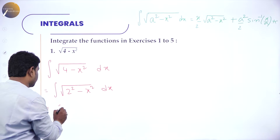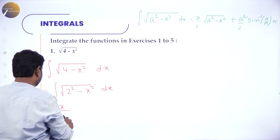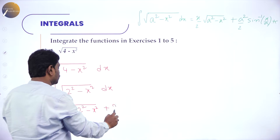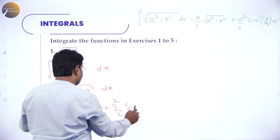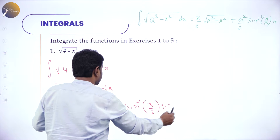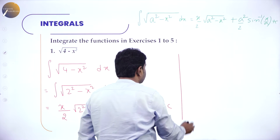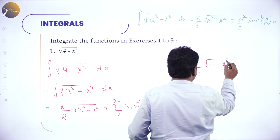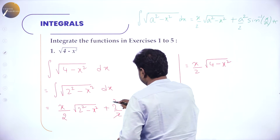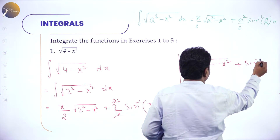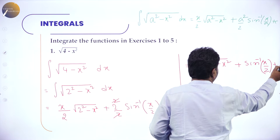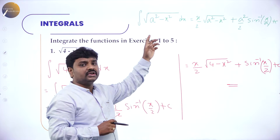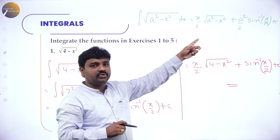So the answer is x/2 · √(2² - x²) + 2²/2 · sin⁻¹(x/2) + C. Simplifying further: x/2 · √(4 - x²) + 1 · sin⁻¹(x/2) + C (since 2/2 = 1). This is the final answer. It was in the form √(a² - x²), using the formula: x/2 · √(a² - x²) + a²/2 · sin⁻¹(x/a) + C.